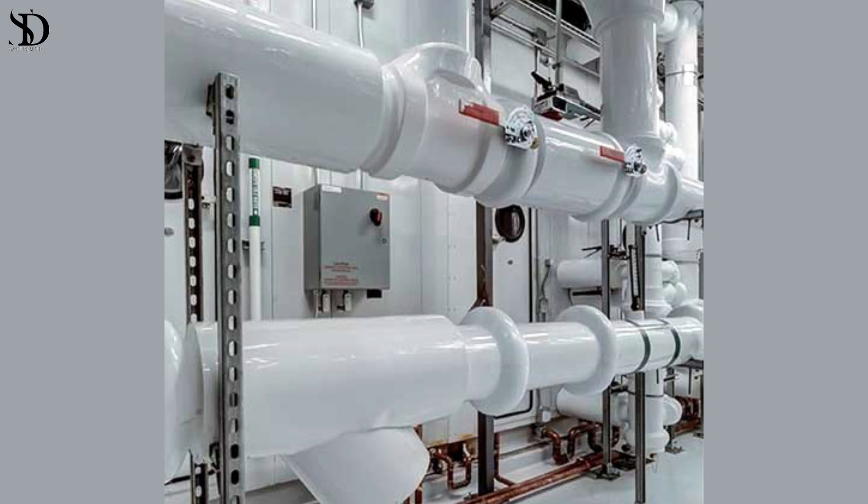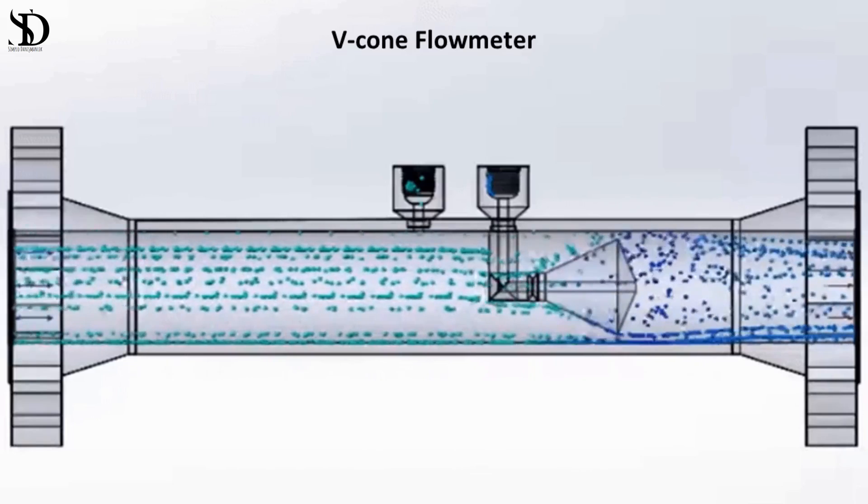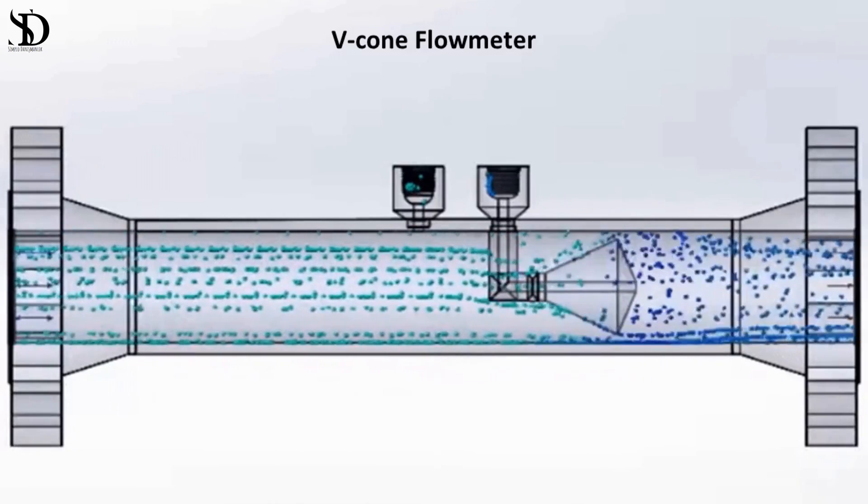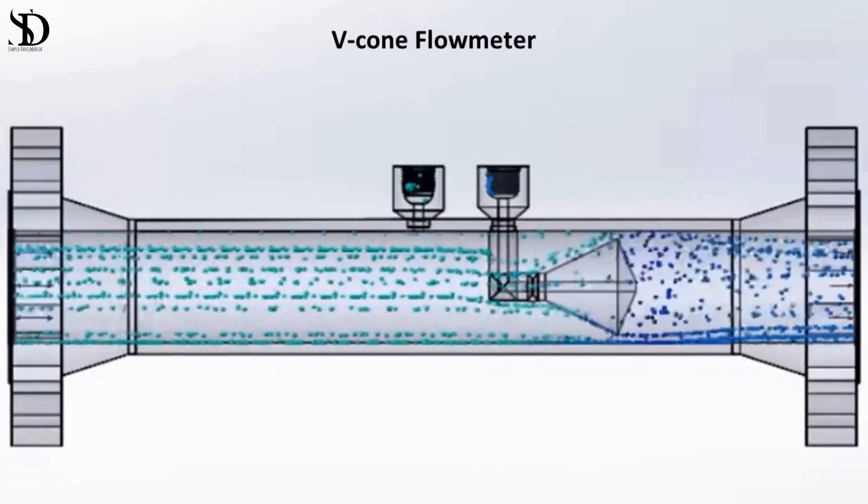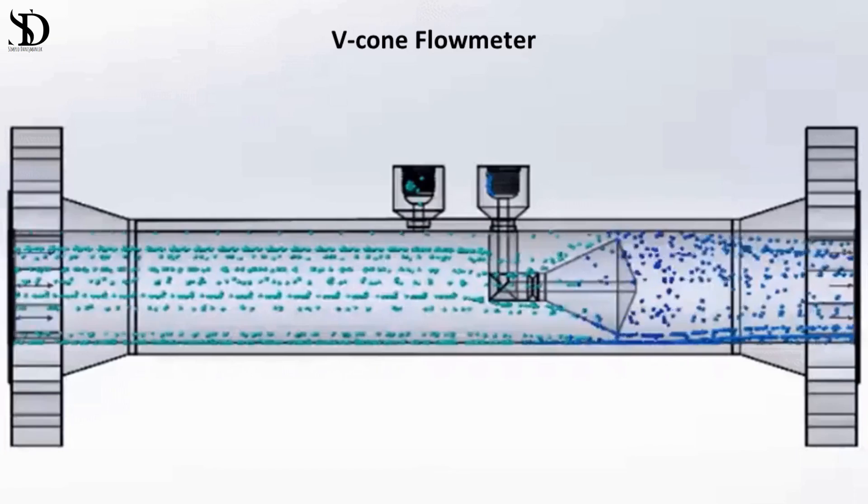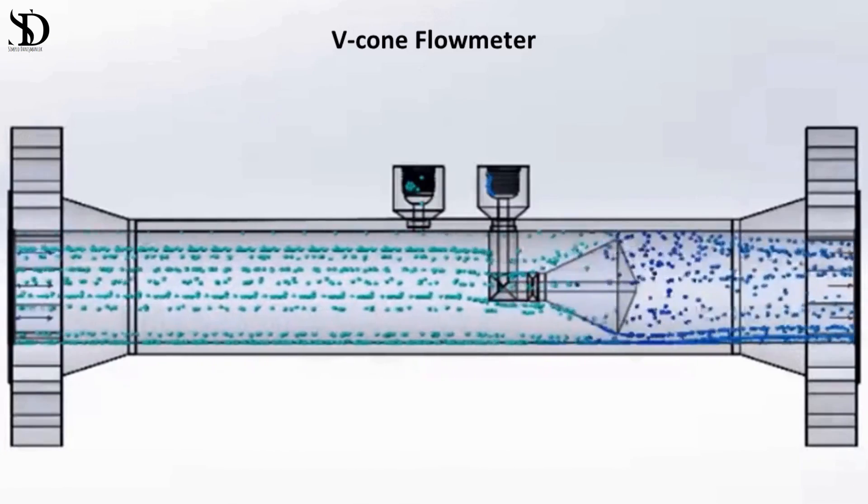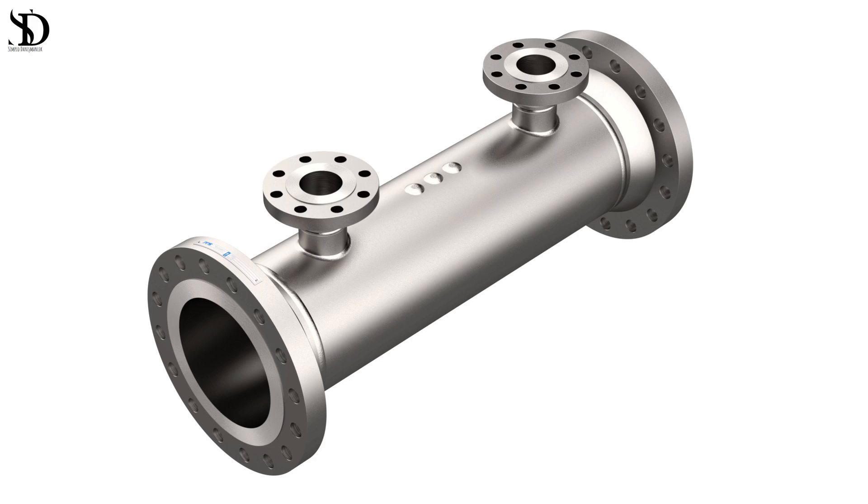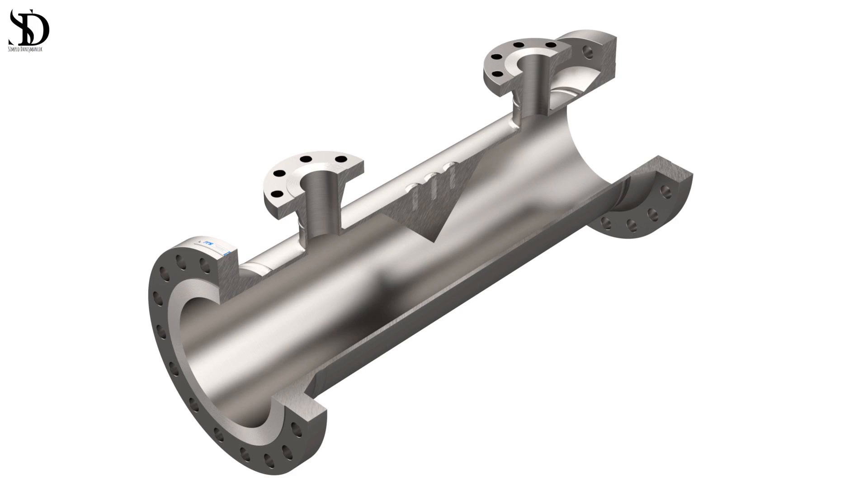V-cone flow meters introduce a unique approach by utilizing a centrally placed cone within the pipe. This design produces a stable differential pressure and enhances accuracy across a wide range of flow conditions. Segmental wedge flow meters feature a wedge-shaped obstruction that can be adjusted to accommodate different flow rates. They offer flexibility and accuracy, making them suitable for various applications.